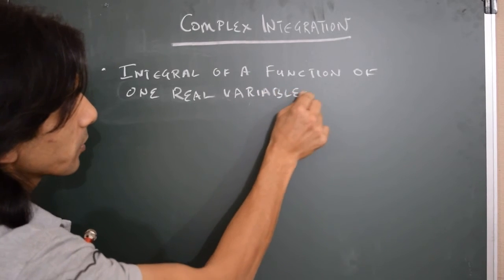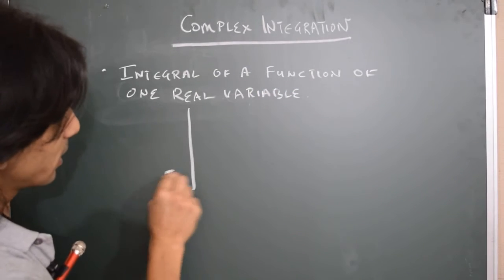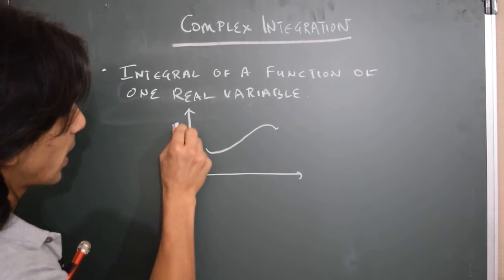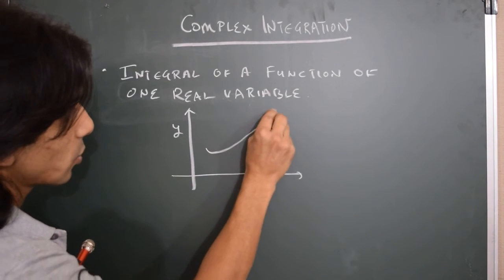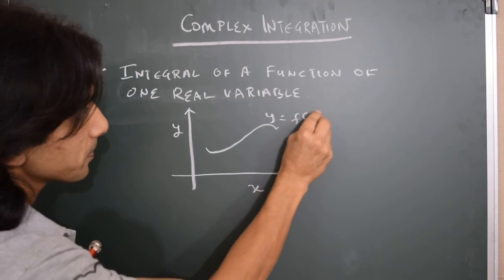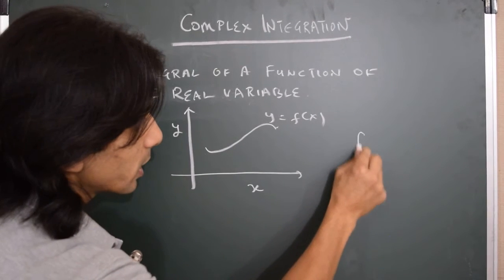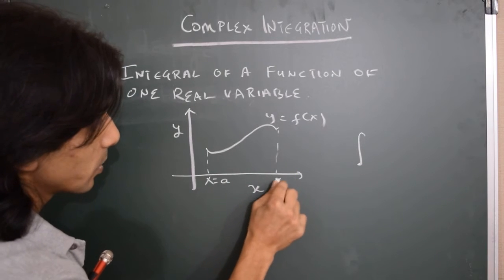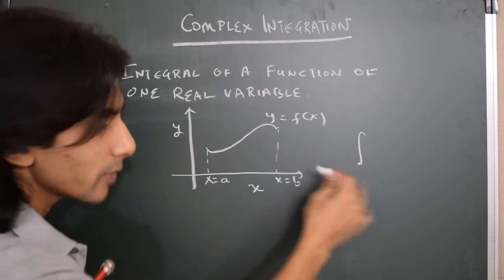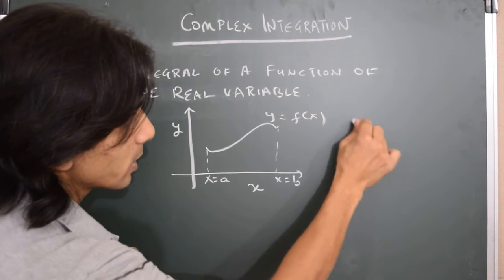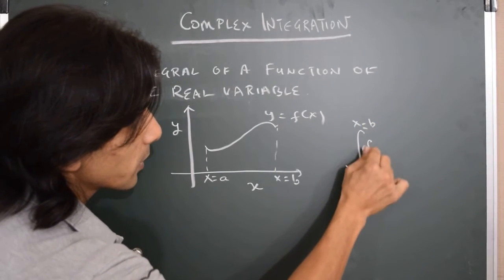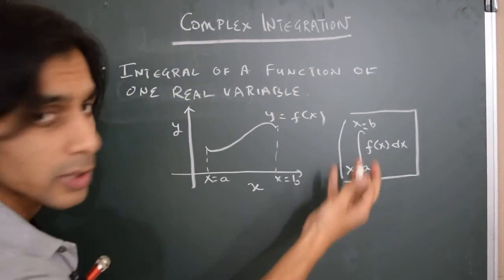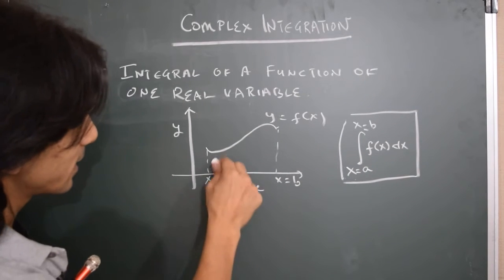The familiar notion is that the integral essentially approximates the area under the curve. So let's say this is some function — this is the y-axis, this is the x-axis, and this is some function y equals f of x. Then the symbol we use for the integral from x equals a to x equals b is sort of like a summation symbol, going from x equals a to x equals b of the function f of x dx.